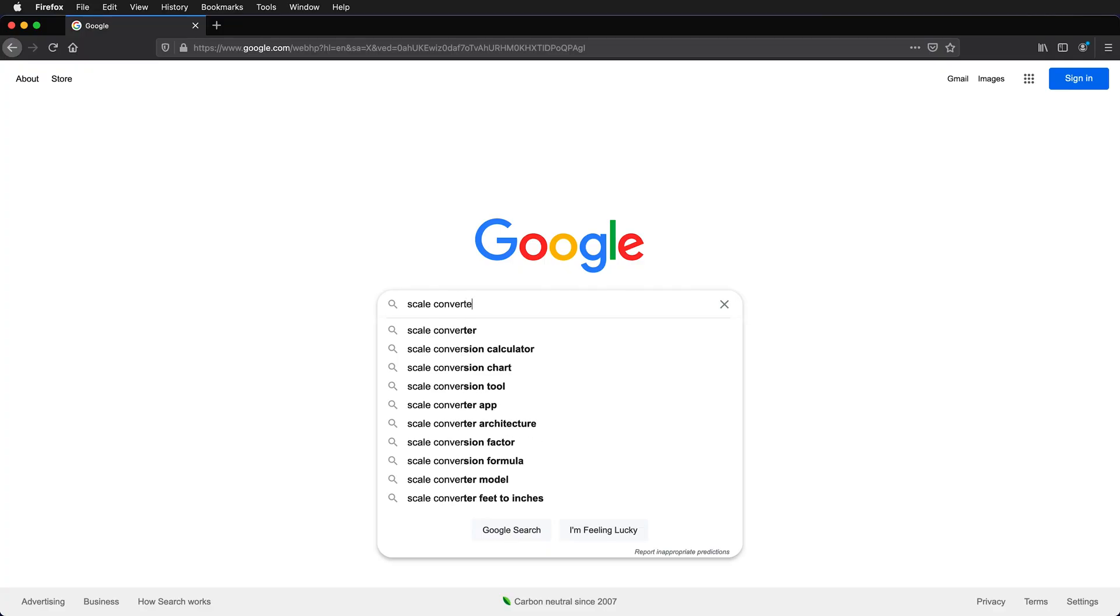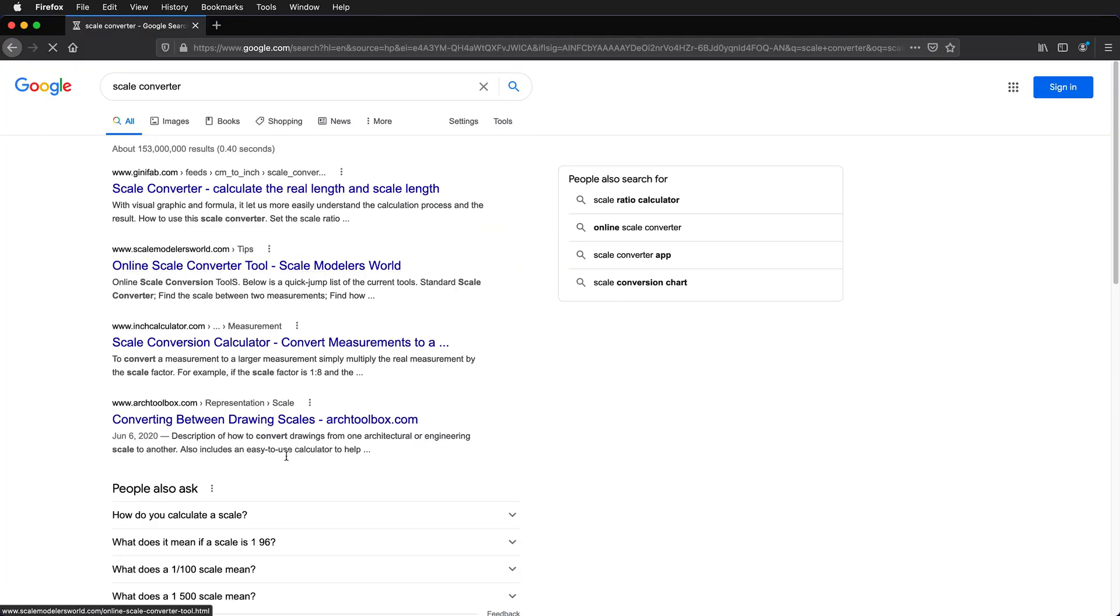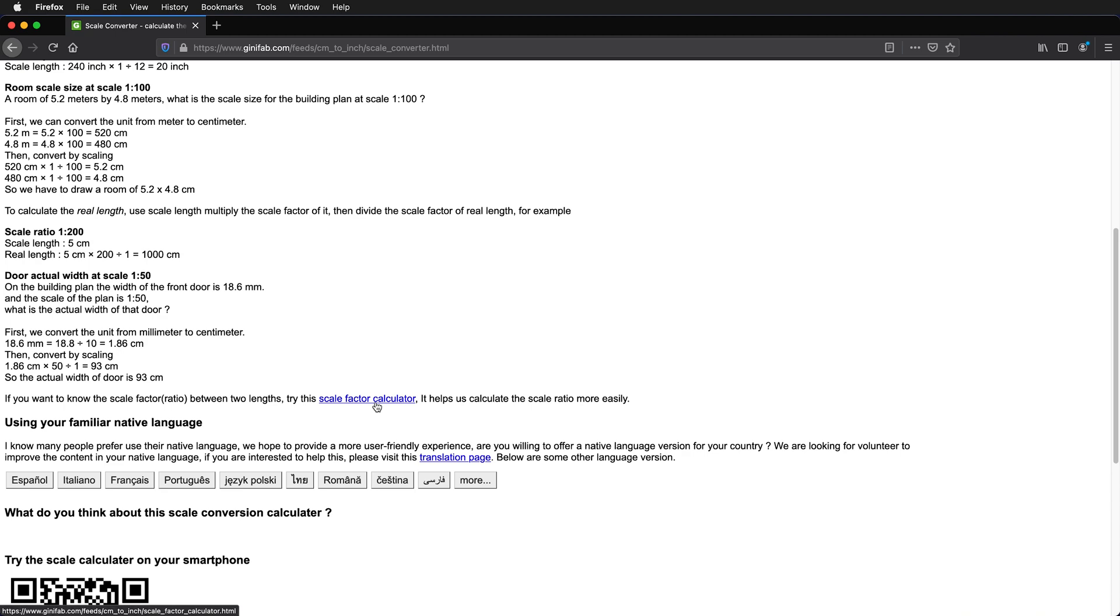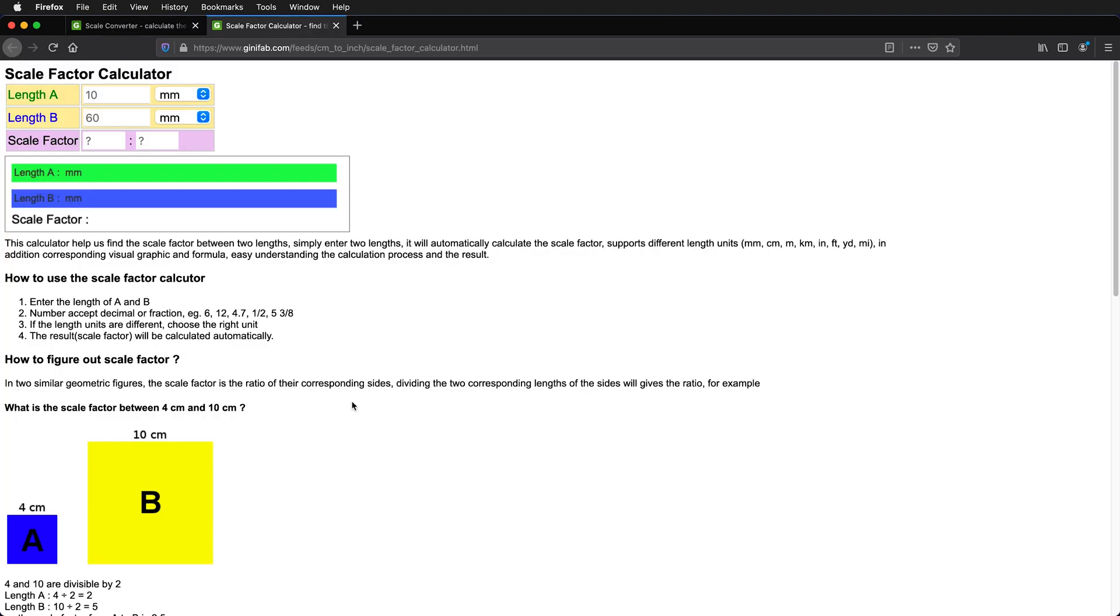If we type in Scale Converter into Google, we come up with lots of different solutions. Try different ones and see which one you like the best. I'm going to click on this first one at the top. Here we can put in a scale ratio, the real length that we want to have, and then our scale length. But how do we get the scale ratio? We can scroll down, and on the same website they have a scale factor calculator. Click on that.